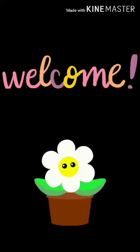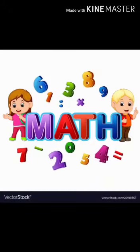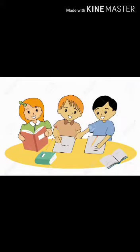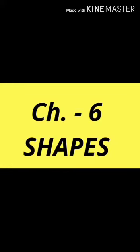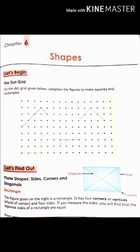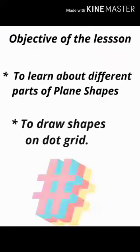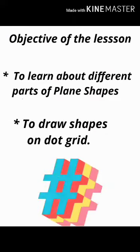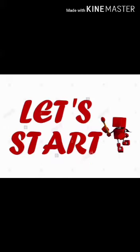Hello everyone, a very warm welcome to all my dear students in today's maths class. I hope you all are staying safe and doing well in your study. We had completed 5 chapters of maths and today we are going to start Chapter 6, Shapes, which is on page number 81 in your maths course book. In today's session, first of all, we will discuss about plane shapes or 2D shapes. The objective of today's lesson is to learn about different parts of plane shapes and to draw shapes on the dot grid. So, let's begin.